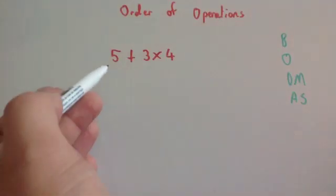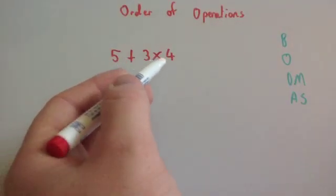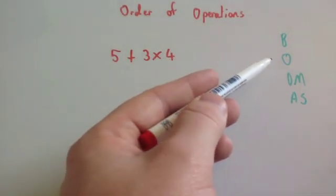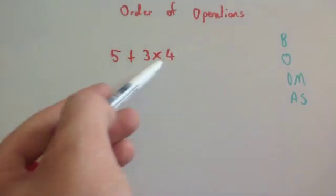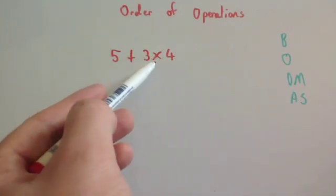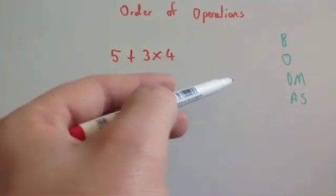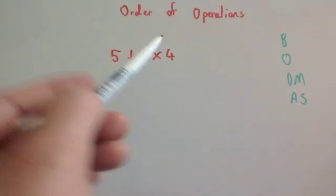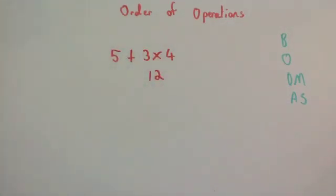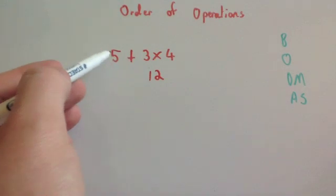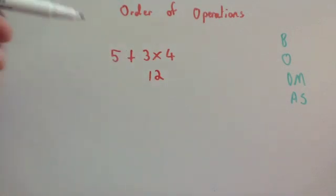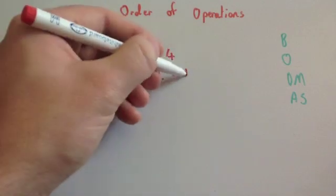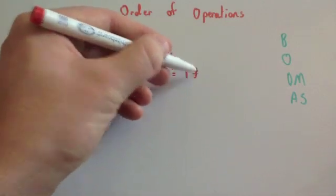This time we've got 5 plus 3 times 4. There are no brackets and no orders, but there is a multiplication, so we do that first: 3 times 4 is equal to 12. Then we have the rest of the sum: 5 plus 12 is equal to 17. So the answer is 17.